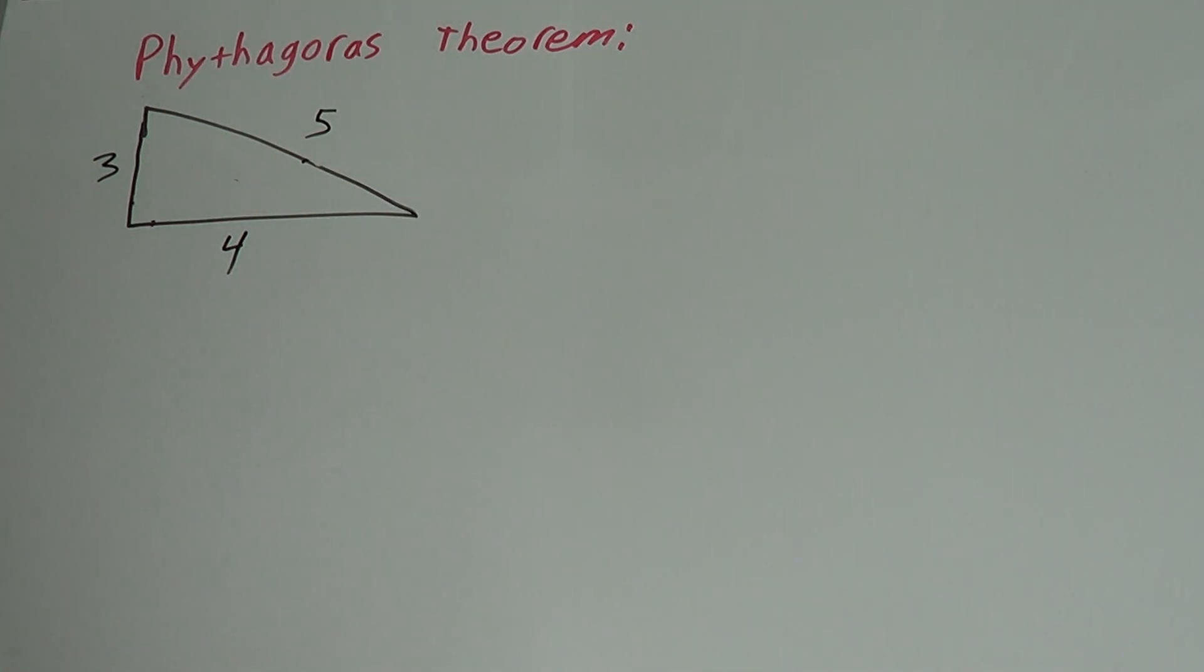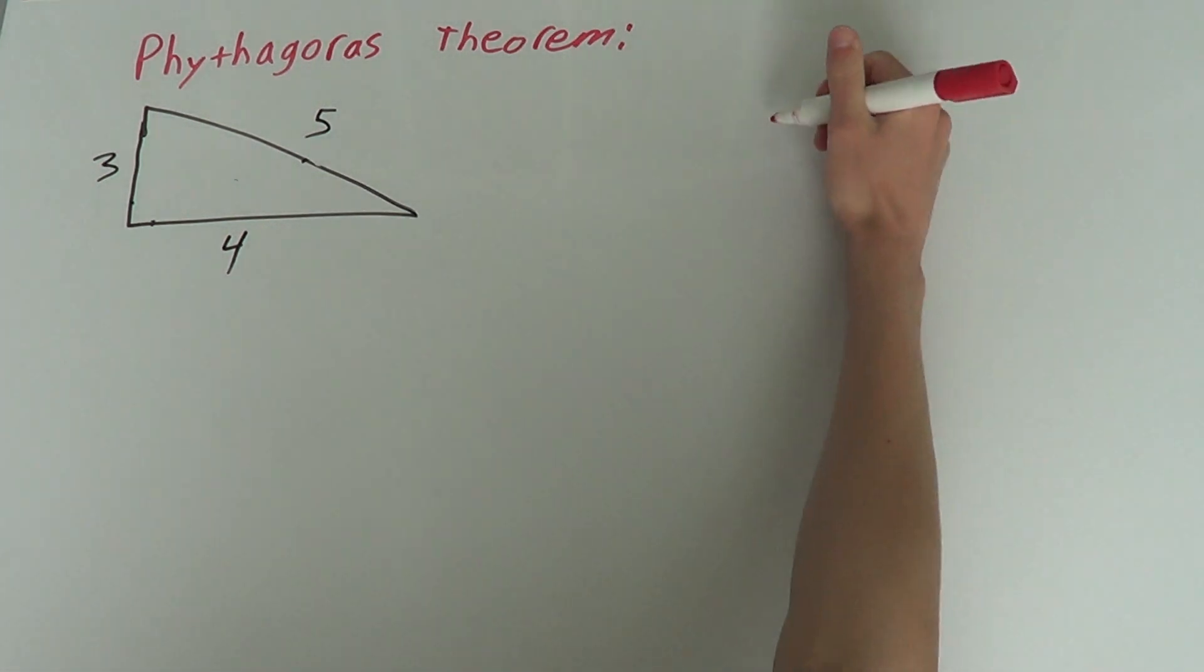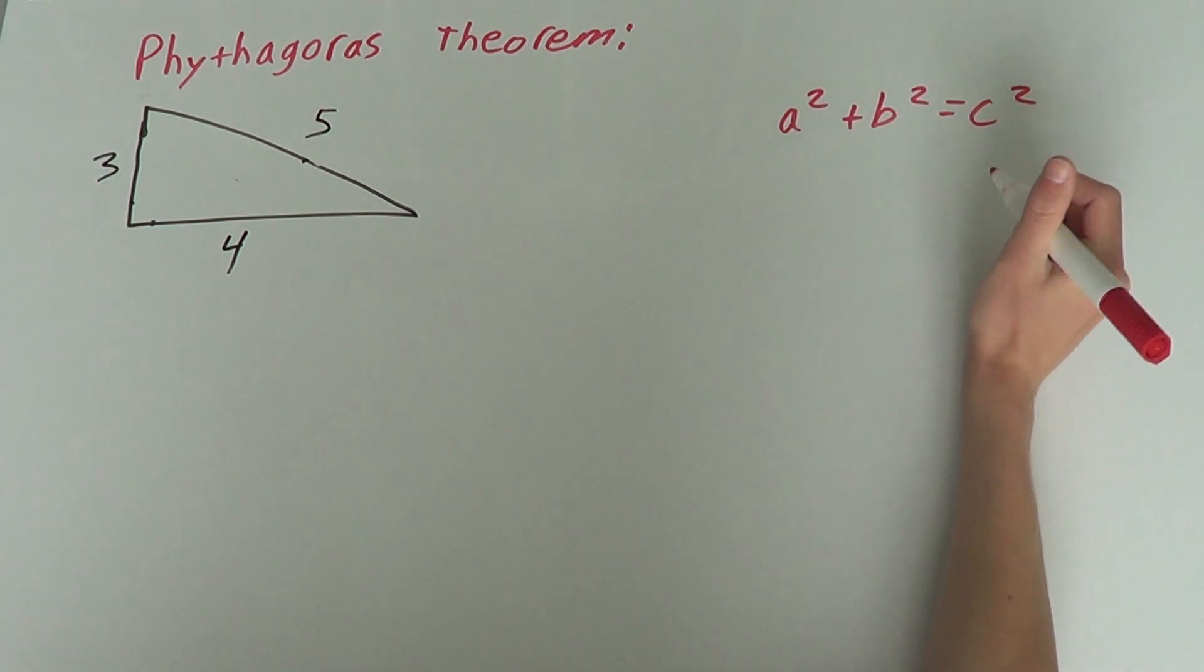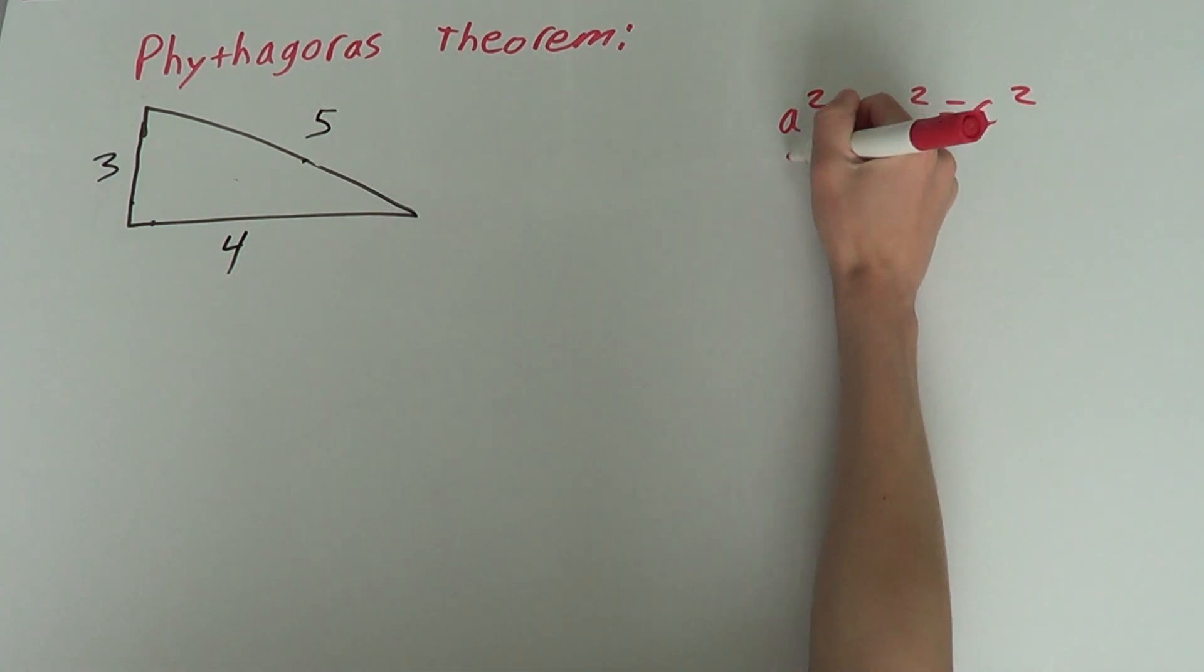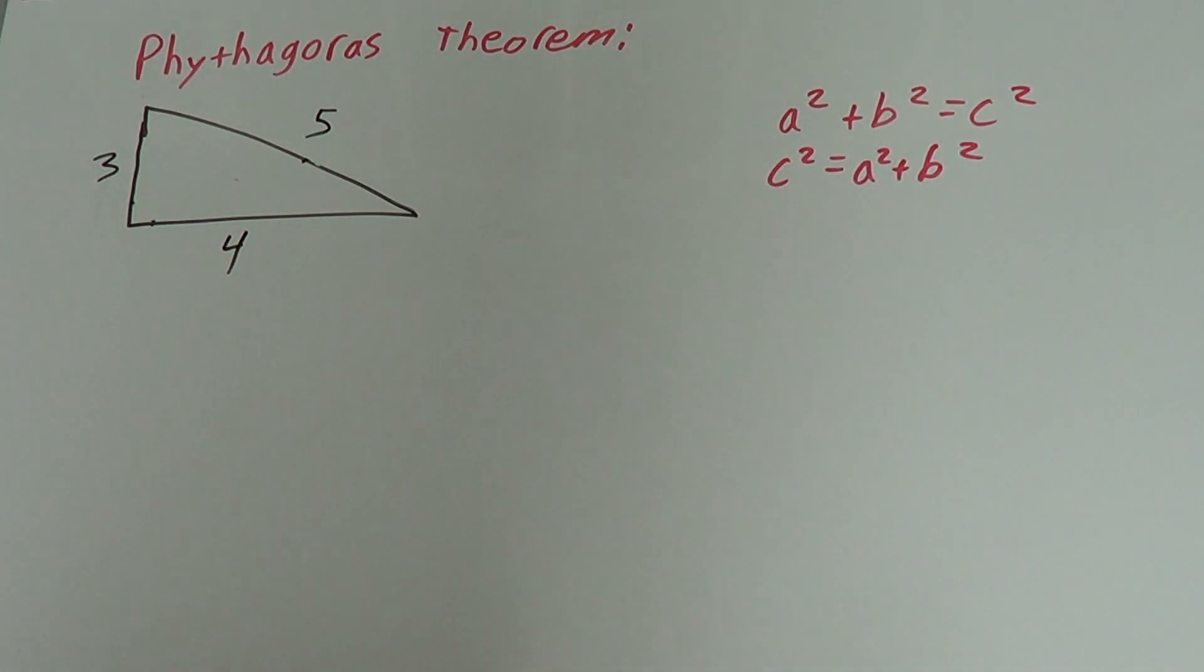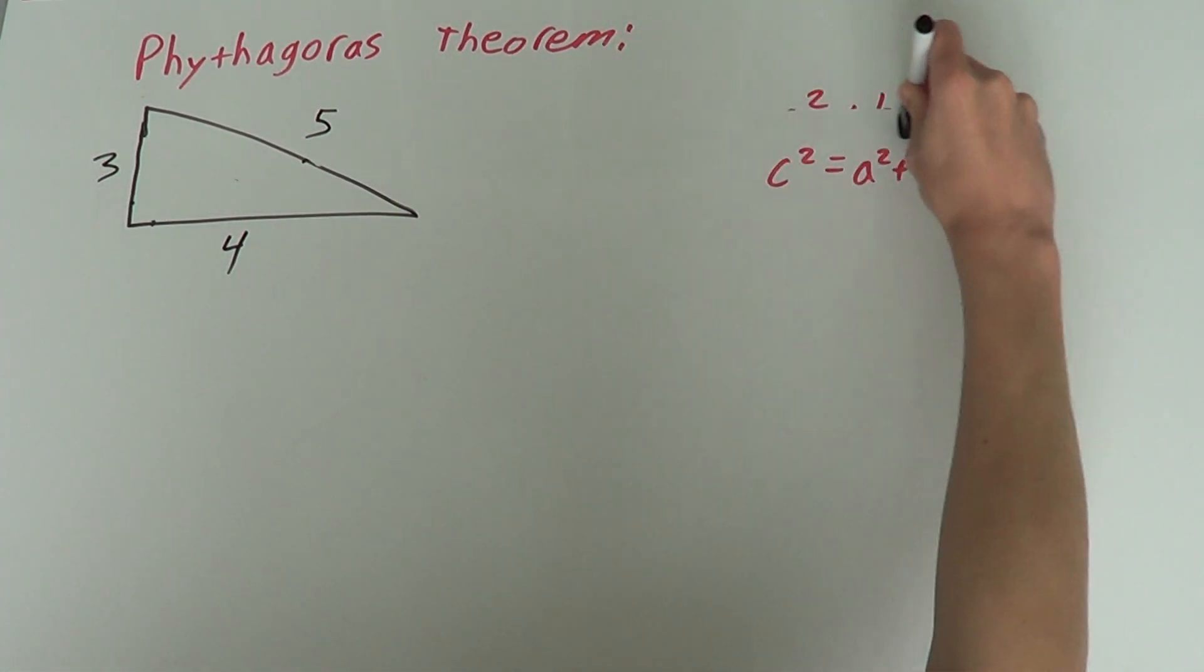But how do I do that? I use the formula. The formula for Pythagoras Theorem is a squared plus b squared equals c squared. It can also be written the other way. So, c squared equals a squared plus b squared. I usually like to write it the second way, but it makes no difference.